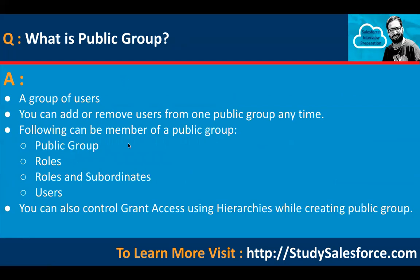What is a public group? In sharing, we also use public groups. Basically, a public group is a group of users — you can add or remove users at any time. Members of a public group can include: another public group, roles (meaning all users assigned that role become members), roles and subordinates, and individual users. You can also control 'Grant Access Using Hierarchies' while creating a public group.